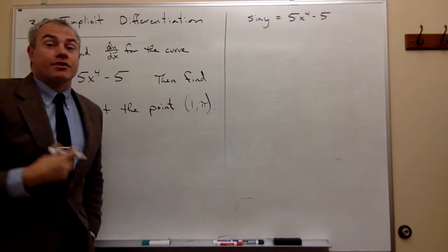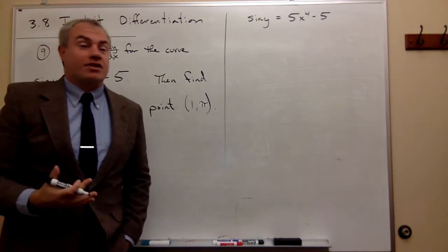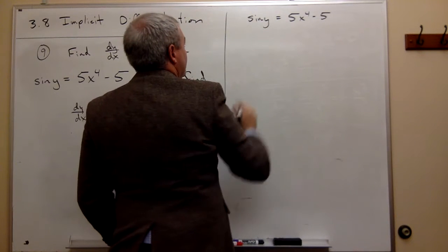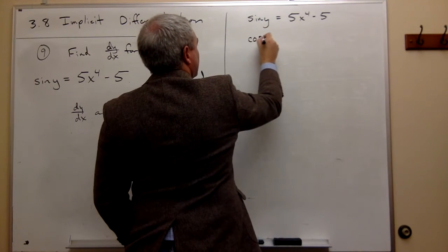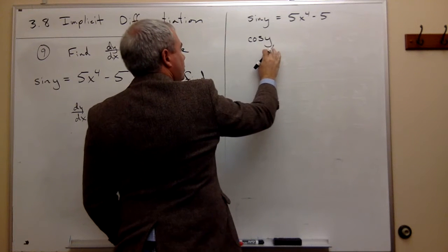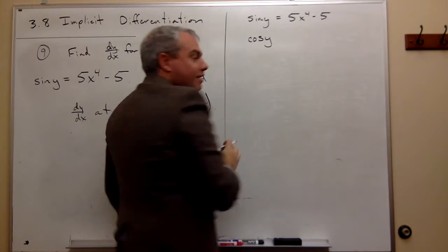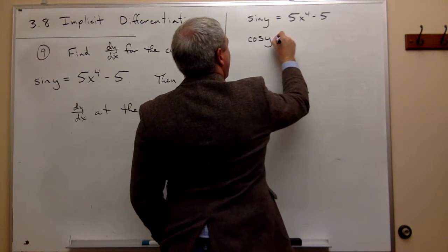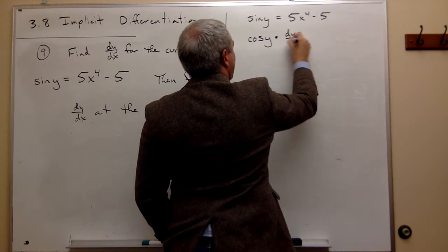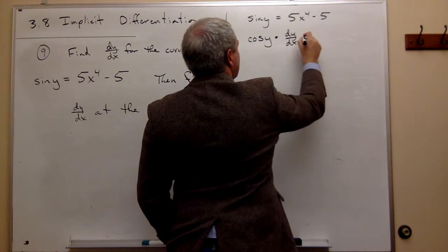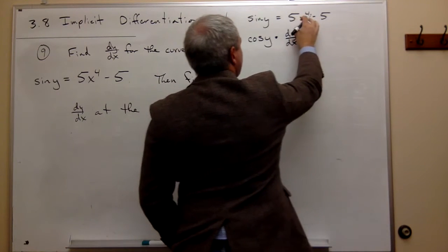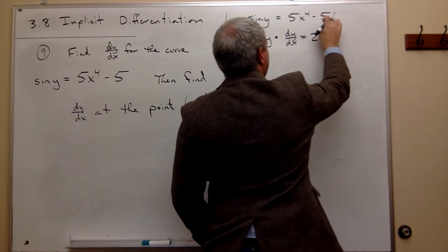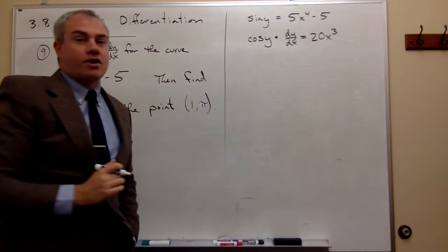Now let's take the derivative of both sides of this equation. If we do, the derivative of sine of y is cosine of y, but then we have to multiply by the derivative of y because we used the chain rule on this. So we multiply by dy/dx, which equals the derivative of 5x to the fourth is 20x cubed, and the derivative of minus 5 is 0.